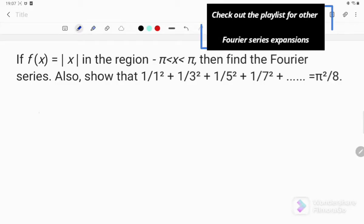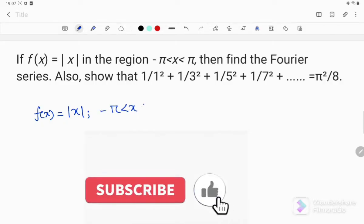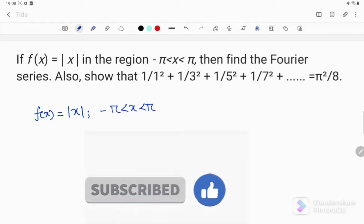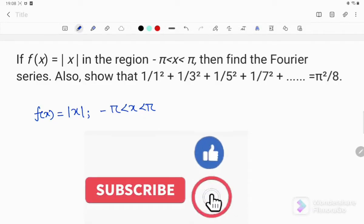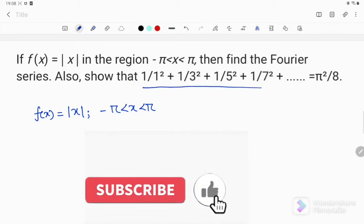Here we have one function f(x) equals mod x and the region is minus pi to pi. We have to expand this f(x), that is mod x, in Fourier series. We also have to prove this expression as well.